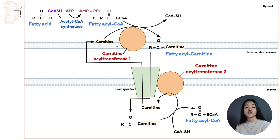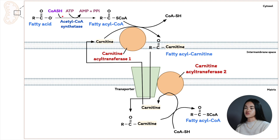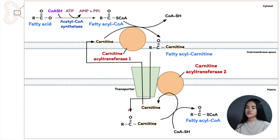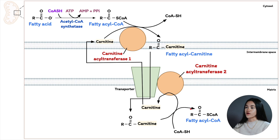That is how fatty acids are activated and transported into mitochondria. To recap: first, we combine fatty acid and CoA to produce fatty acyl-CoA — activating the fatty acid using ATP. Second, we substitute CoA for carnitine so it can pass through the intermembrane space and enter the matrix through the carnitine co-transporter. Third, once in the matrix, the fatty acyl group is transferred back to CoA. Now that we have fatty acids in the mitochondrial matrix, they will be converted into acetyl-CoA — a process called beta oxidation — which is covered in part two.